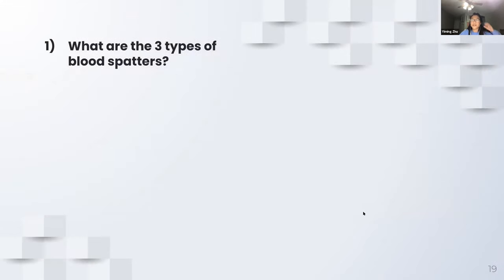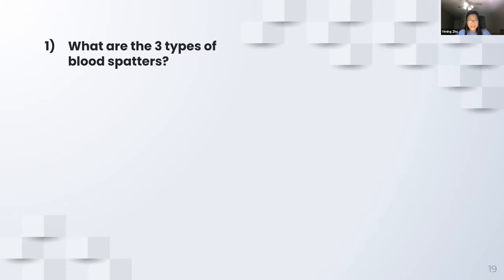We're going to go over last week's homework. I'm going to give you guys the forensics file link again. If you guys don't have it, open it from here, and you can open up the forensics week two homework because that's what we're going over for the last five minutes. Yeah, if you get nauseous at blood — I get nauseous at all blood except my own. I like to think of it as very concentrated red Kool-Aid, or straight-up red food coloring. So, what are the three types of blood spatters? Do you guys want to answer the homework questions here as a practice problem, or do you want me to just go over the answers?